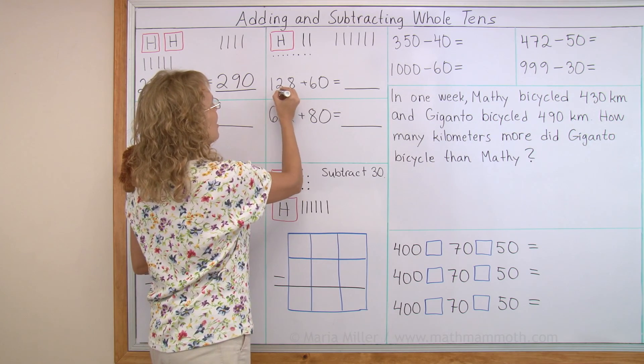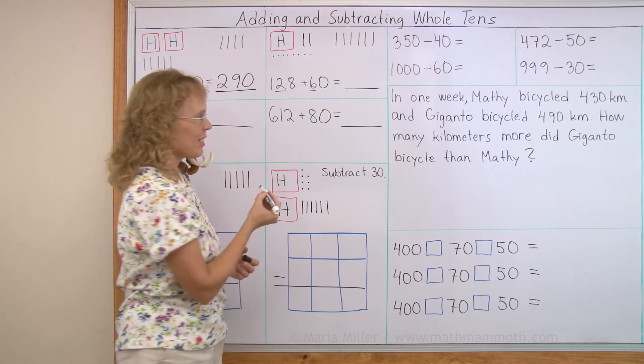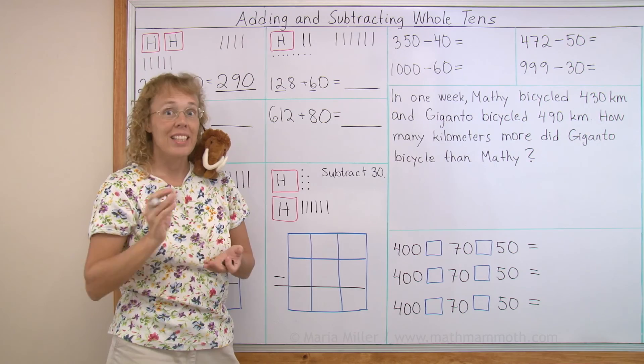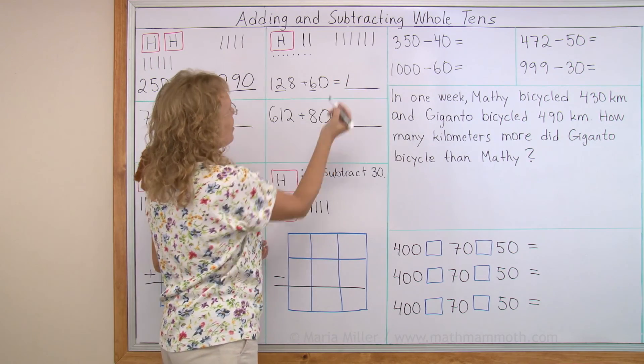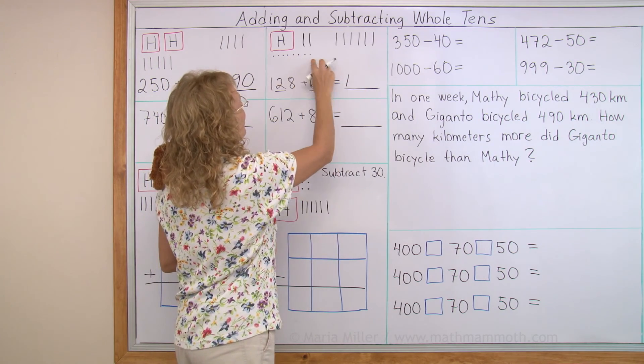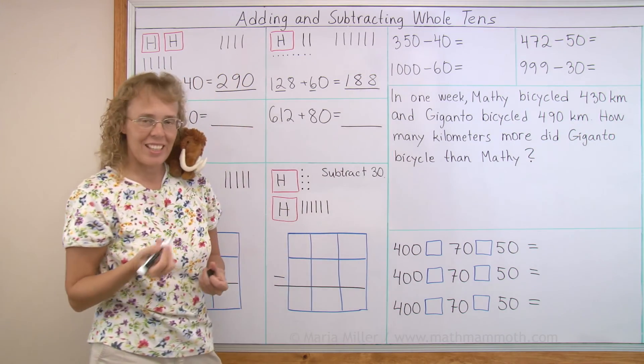Over here, notice the two tens and the six tens. So you add those. You get eight tens. And the 100 does not change. And these here don't change. So we get 188.